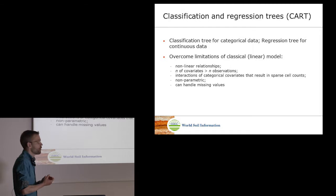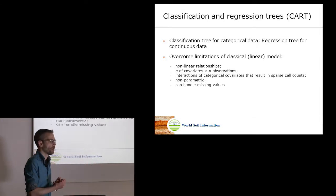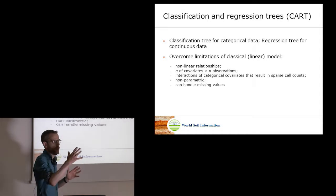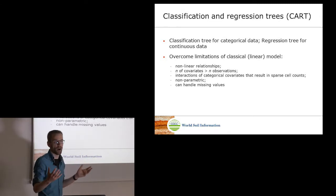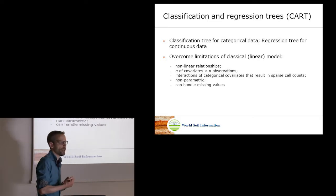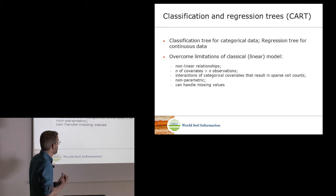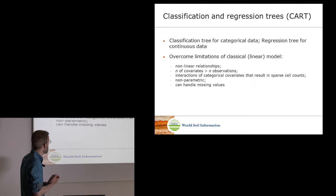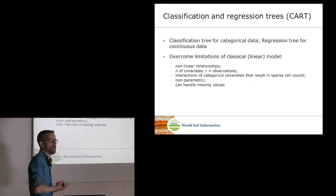They can more easily handle interactions between categorical covariates that result in sparse cell counts. For example, if you have five soil classes and five land cover classes, that's 25 combinations. With linear regression you need an observation for each of those 25 combinations — which can be hard with a limited sample. Tree models handle these interactions more naturally. They are also non-parametric, meaning we make no assumptions about the error distribution — there's no normality assumption as in linear modeling. They can also more easily handle missing values in your data.